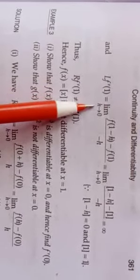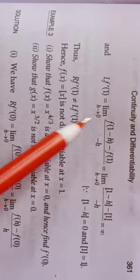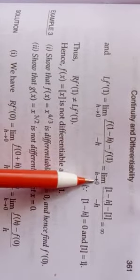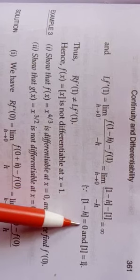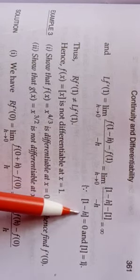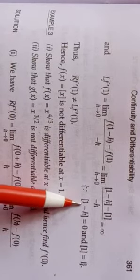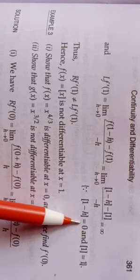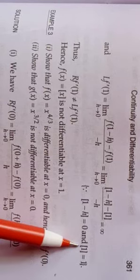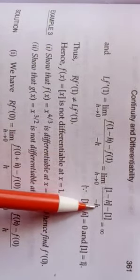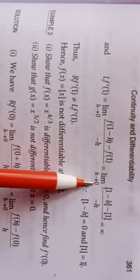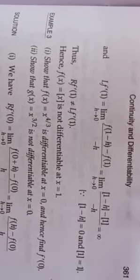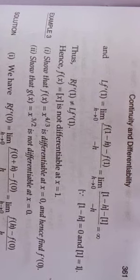The left-hand derivative is limit h→0⁻ of [f(1−h) − f(1)] / (−h). Now ⌊1−h⌋ = 0, because some value is taken away from 1, making it less than 1, and the integer immediately less than 1 is 0. And ⌊1⌋ = 1. So we are getting [0 − 1] / (−h) = 1/h, which tends to infinity as h→0. Therefore the left-hand derivative is not equal to the right-hand derivative, which means ⌊x⌋ is not differentiable at x = 1.